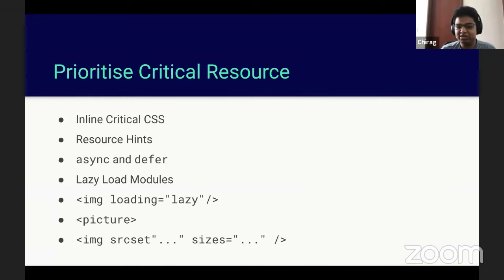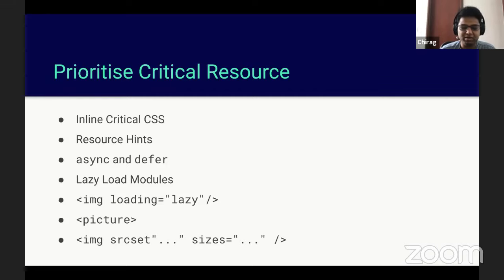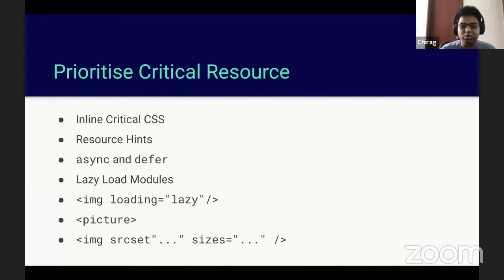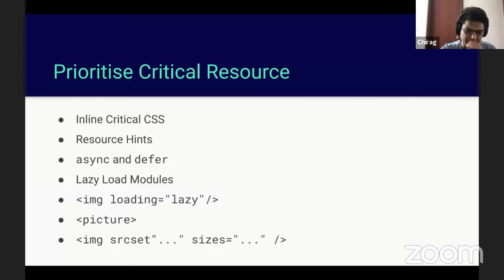Image srcset: the srcset and sizes attributes combined allow you to make your images responsive. In srcset you specify multiple URLs for different-sized versions of the same image, and in sizes you specify the viewports they map to. Based on the screen size of the user, the particular resource will be loaded — so you have one-to-one control over which viewport size maps to which image size.